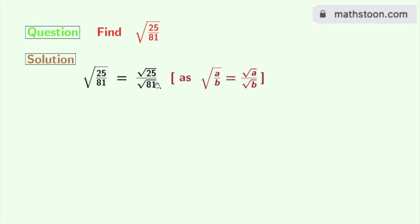As we know that square root of a by b is equal to root over a divided by root over b. Here a is 25 and b is 81.